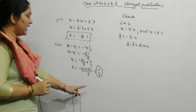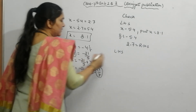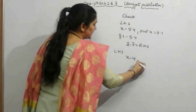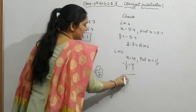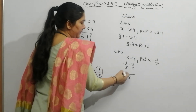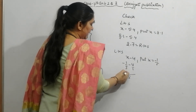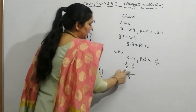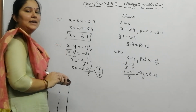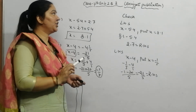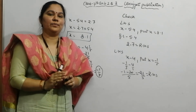Now check: put x equal to minus 1 by 5 on the left-hand side. Left-hand side is x minus 4. So minus 1 by 5 minus 4 by 1. LCM is 5: minus 1 minus 5 times 4 equals minus 1 minus 20, giving minus 21 by 5, which equals the right-hand side. Left equals right, so our answer is correct. This completes question number 2. I hope it is clear to everyone. Please share and subscribe. Thank you so much, and stay safe at home. Take care everyone.